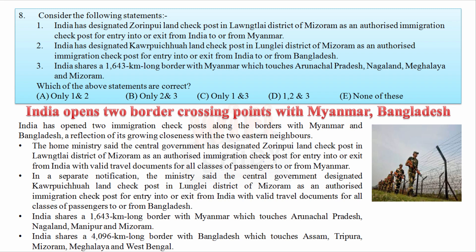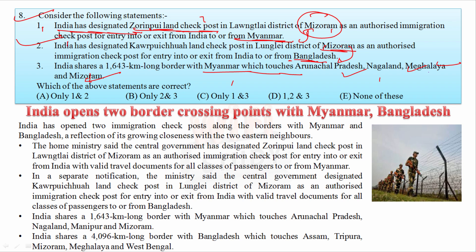Consider three statements about check posts: First, India designated the Zoramthanga Land Check Post in Lawngtlai district of Mizoram as an authorized immigration check post for entry/exit between India and Myanmar. Second, India designated another check post in Longtu district of Mizoram for entry from India to Bangladesh. Third, India shares a 1,600 km border with Myanmar touching Arunachal, Nagaland, Mizoram, and Manipur — not Meghalaya. Meghalaya borders Bangladesh. Statements one and two are correct; three is wrong. Answer: A.